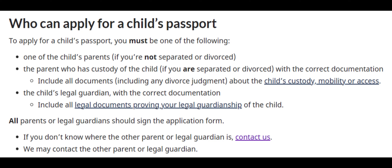Now let's talk about who can apply for a child's passport. One of the child's parents, if you're not separated or divorced. The parent who has custody of the child, if you are separated or divorced, with the correct documentation — include all documents including any divorce judgment about the child's custody, mobility, or access. The child's legal guardian, with the correct documentation — include all legal documents proving your legal guardianship of the child. All parents or legal guardians should sign the application form. If you don't know where the other parent or legal guardian is, contact the Canada Passport Office.